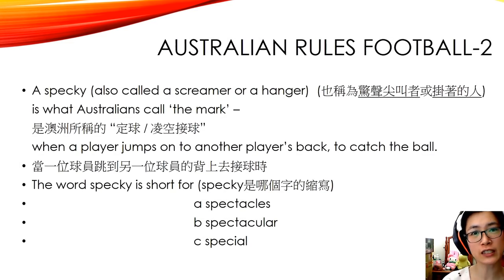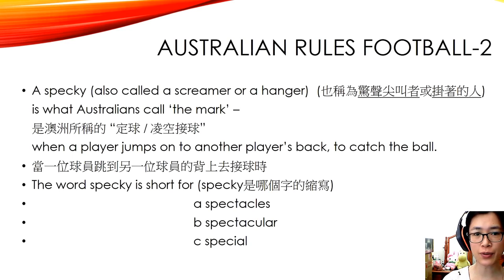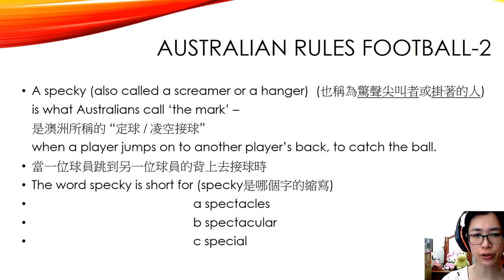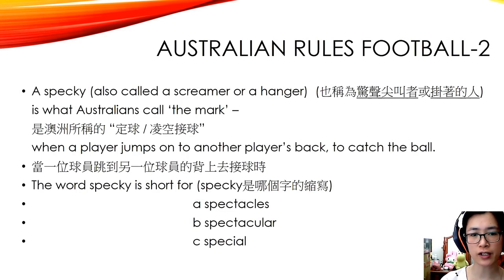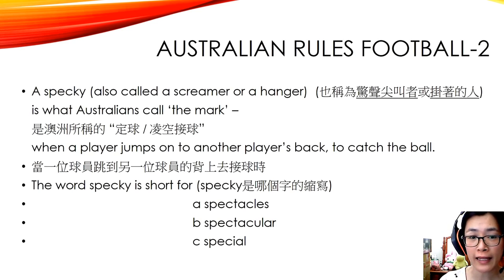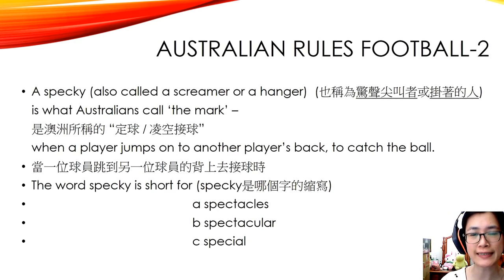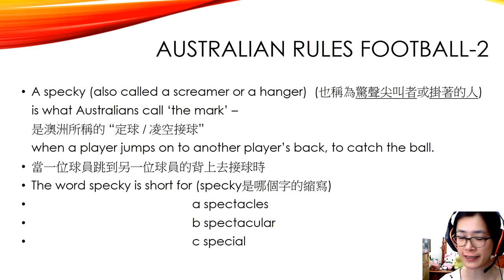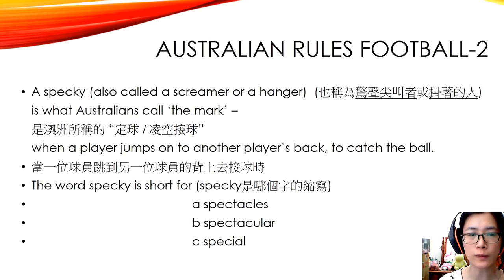A speccy, also called a screamer or a hanger — 也称为尖叫者或挂着的人 — is what Australians call the mark. 是澳洲所称的定球，凌空接球。 When a player jumps onto another player's back to catch the ball, that is called the mark — 定球，凌空接球。